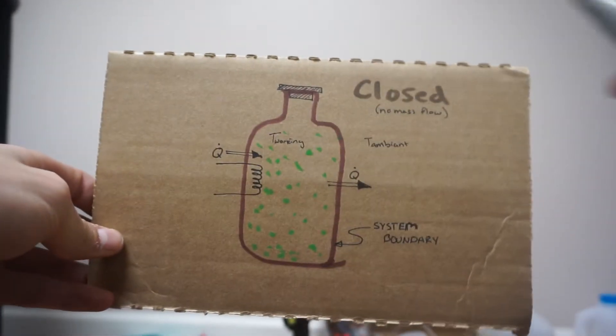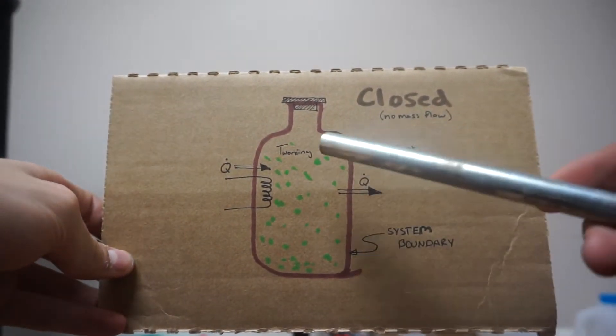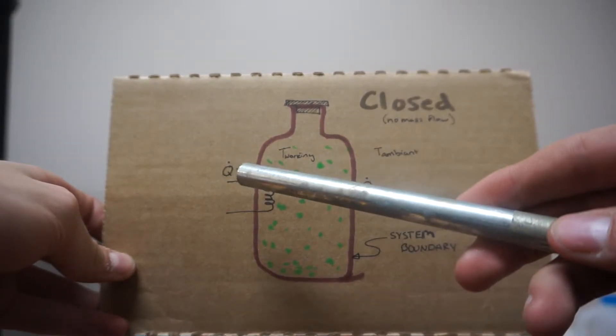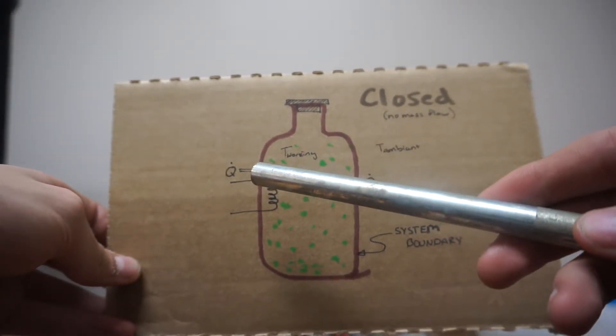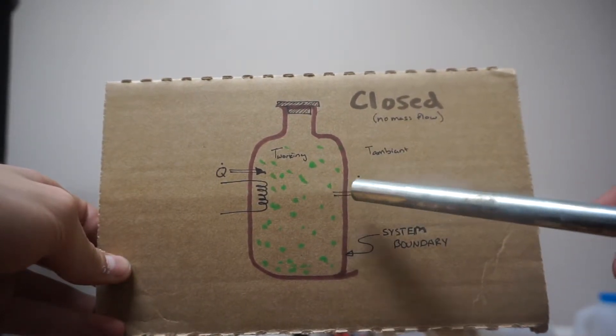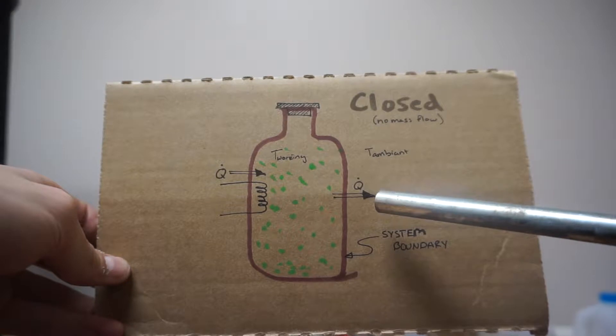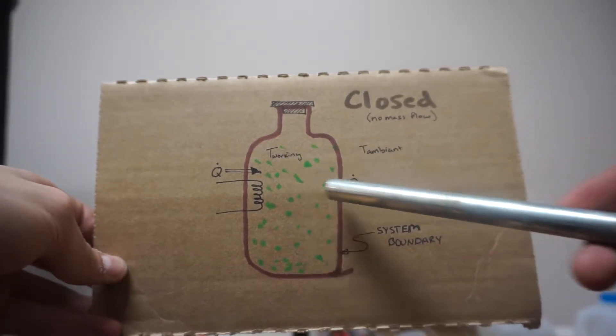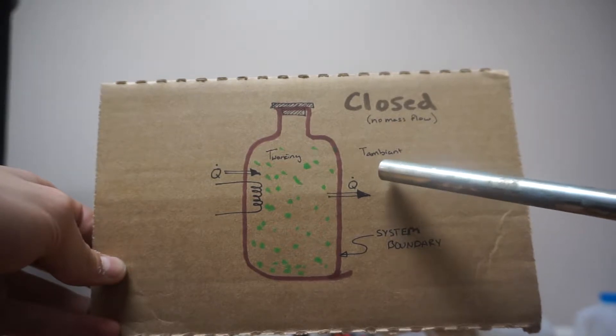Now in industry, how this is done is that they take a big vat, kind of this purple outline right here, and they have a heating coil which moves heat or Q, the Q dot, into the system at the same rate that heat is leaving the system. Heat will probably be leaving the system because your temperature working is going to be higher than your ambient temperature outside the vessel. So the heat is going to transfer from hot to cold.